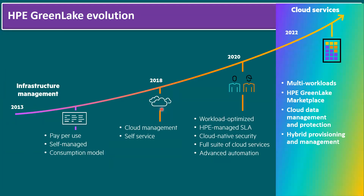Before talking about the Edge-to-Cloud platform, let's first understand what HPE GreenLake is and how it evolved from 2013 to now. In 2013, HPE GreenLake started with infrastructure management — HPE ProLiant servers, Synergy servers, and all HPE servers. Instead of purchasing complete servers, customers could utilize server infrastructure like a cloud, paying only for what they use.